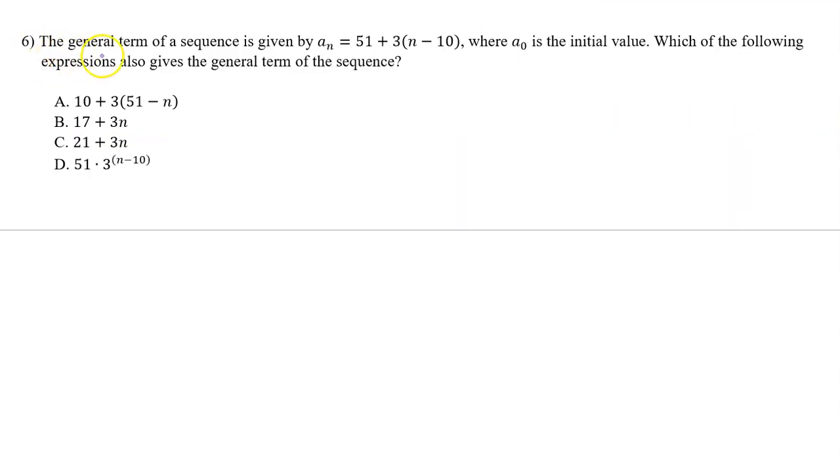Number 6. The general term of a sequence is given by a_n equals 51 plus 3 times n minus 10, where a_0 is the initial value. Which of the following expressions also gives the general term of the sequence?